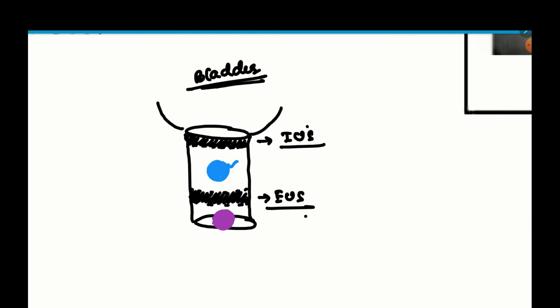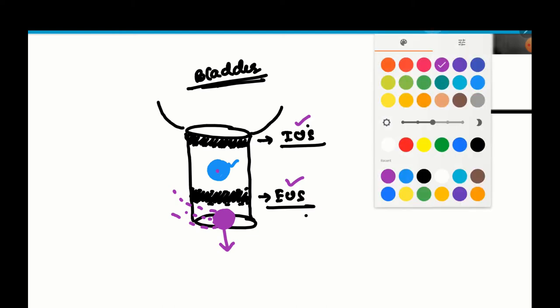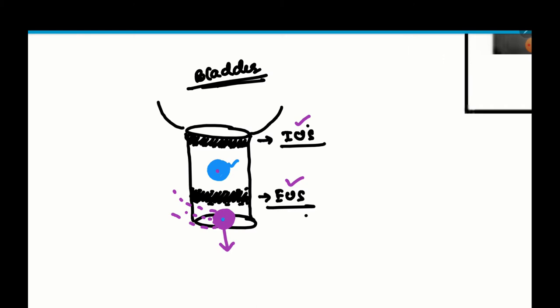The next ectopic site of opening is further down. If the ectopic site is below the level of both the internal and external urinary sphincters, the urine drains directly out without any sphincter to prevent it, leading to incontinence and dribbling of urine.